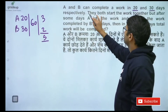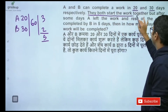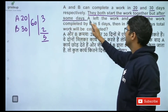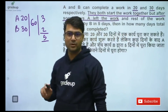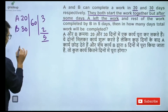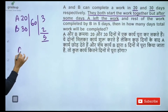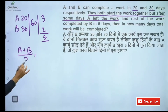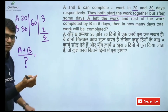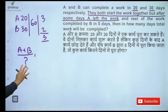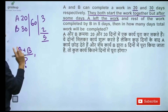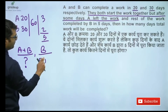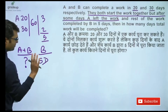They both start the work together, but after some days A left the work. I don't know how many days, so that is why I am putting a question mark here. He left the work, then the remaining work is completed by B in 5 days.